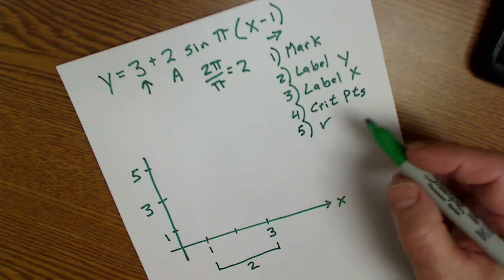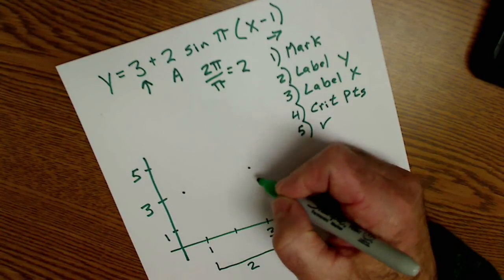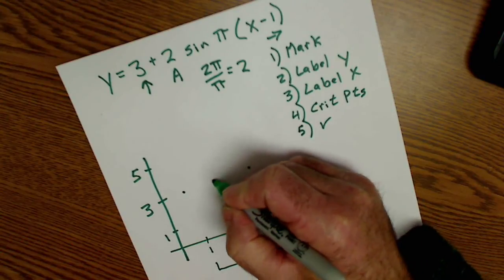So critical points—this is a sine graph. It starts in the middle. On the y-axis, it ends. In the middle of the x is the middle of the y.